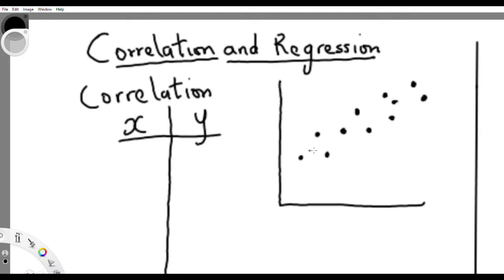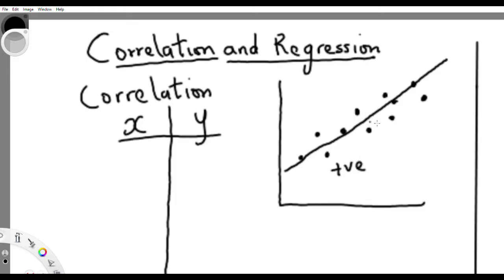Take for example this scatter diagram. If you're trying to measure the relationship, you notice that the points are all ascending — they go upward together — which means they have a positive relationship. The strength, meaning how closely the points cluster together, can also be determined by correlation.